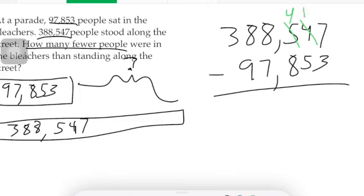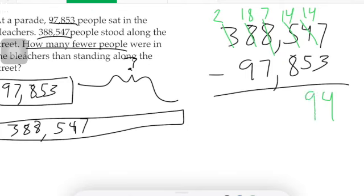Five becomes four, this four will become fourteen. Four minus eight I can't do, so I'm going to regroup from that and turn this four into fourteen; that becomes seven. I can do seven minus seven. I can't do eight minus nine, so three becomes two, eight becomes eighteen. Now I can subtract everything: seven minus three is four, fourteen minus five is nine, fourteen minus eight is six, seven minus seven is zero, eighteen minus nine is nine, and two minus zero is two. Two hundred ninety thousand six hundred ninety-four.